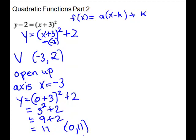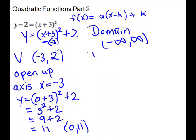Let's answer domain and range before we do the graph. The domain on a parabola that is a function is negative infinity to positive infinity. The range depends on the vertex — this one opens up, so the vertex is the lowest point. We want the y-coordinate, so it's going to be [2, ∞). We didn't even have to have the graph, but we'll put one on.